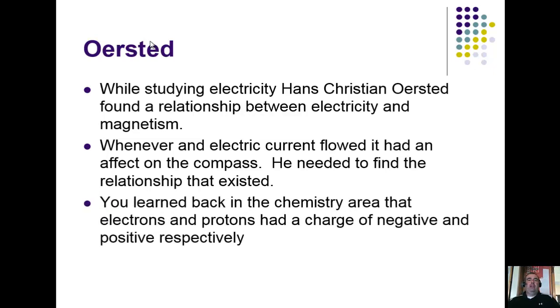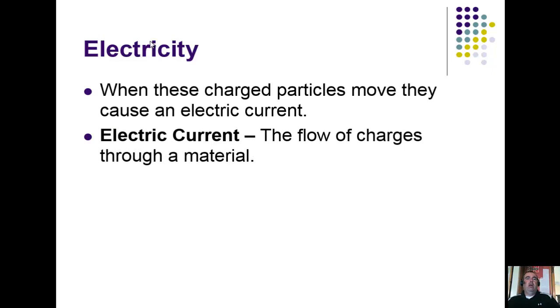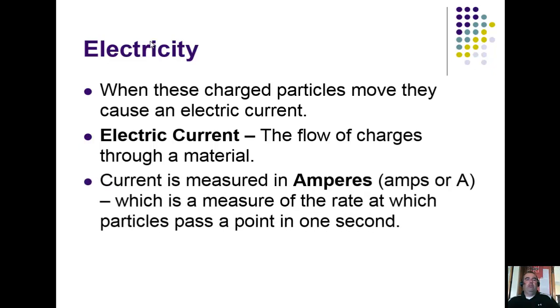You learned back in the chemistry section that electrons and protons had a charge—the electron being negatively charged and the proton being positively charged. This charge was called an electric charge. When these charged particles move, they cause an electric current. Electric current is just the flow of charges through any conducting material.